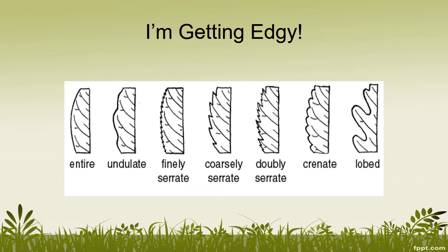Here are some examples of different types of leaf margins. If the margin of the leaf is 100% smooth and not wavy at all, it's considered entire. It could be wavy like undulate, it could have small teeth which is finely serrate, larger teeth is coarsely serrate, it could be lobed, it could be crenate, and so on. There are a lot of different types of leaf edges in the world.